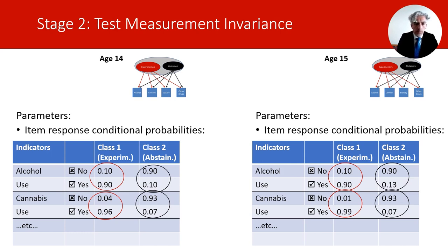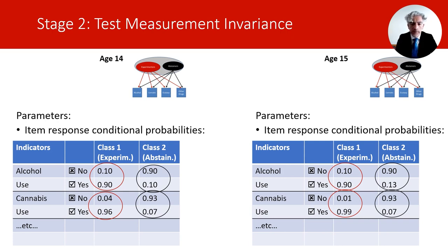Since the model with equality constraints is nested within the model where measurement parameters are freely estimated, we can compare the two models using a likelihood ratio test, which provides a formal test of the null hypothesis that the two models provide the same fit. In the exercises and additional material to these resources, I provide more examples of how to run this test.